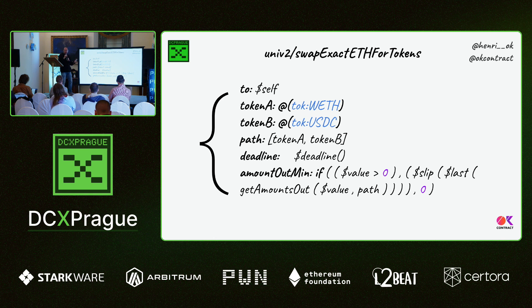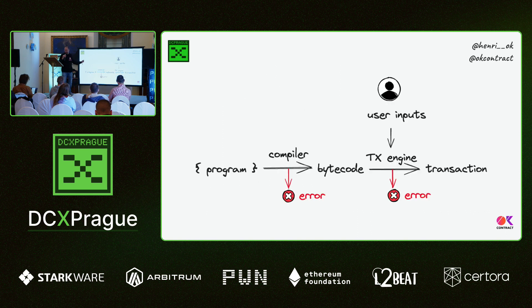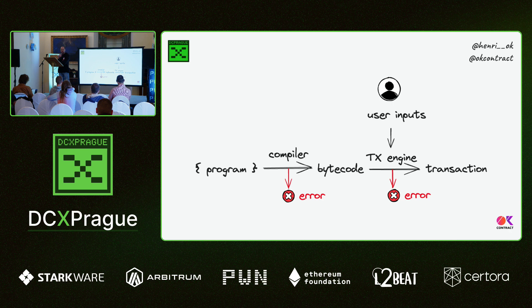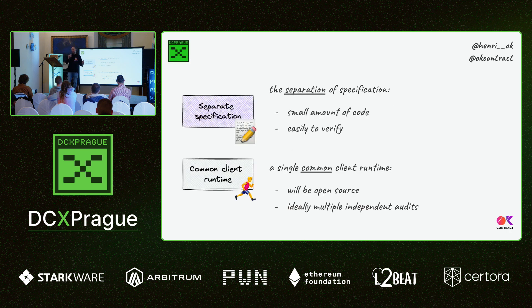Basically it says: we're sending to the wallet that submits the transaction. Token A is fixed but could be left as a search box. The path, the deadline, how we compute the amount-out-min — which is the parameter the method requires. From this definition, we use a compiler to generate bytecode describing this transaction. At compile time we can detect errors if the transaction is not properly specified, and then we have a common transaction engine. We take user inputs and build the transaction directly from clients. Because of the separation of specification and runtime, it's a much smaller amount of code for each project and each interaction, making it easy to verify. The single common runtime, fully open source, can be audited multiple times independently.